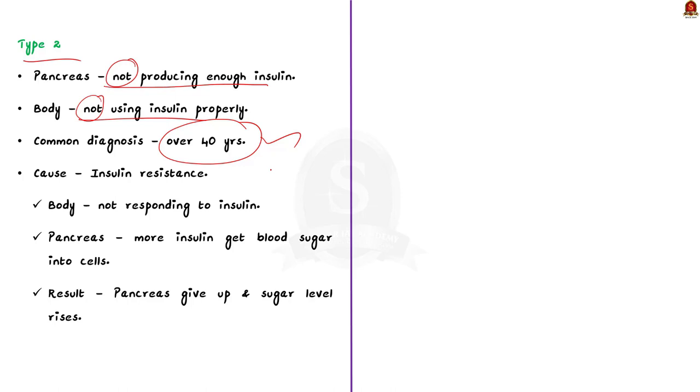The cause of type 2 is insulin resistance. It is a condition where the cells in the body do not respond to insulin and cannot take glucose from the blood. So the pancreas pumps out more insulin to get blood sugar into cells, because insulin helps glucose enter the cells.